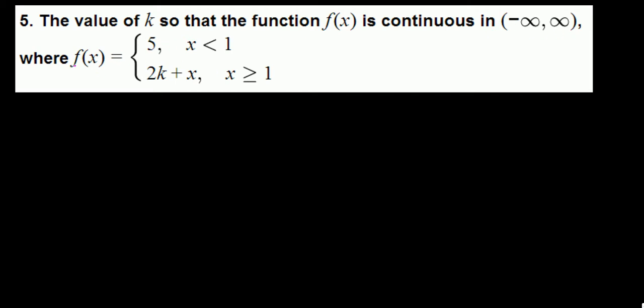If we look at the function, it's defined by two different pieces. For x less than 1, the function is defined by 5, and for all x greater than or equal to 1, the function is defined by 2k plus x, where k is a constant.